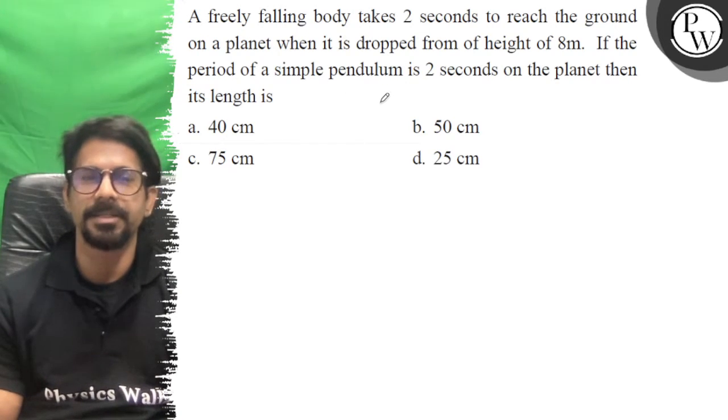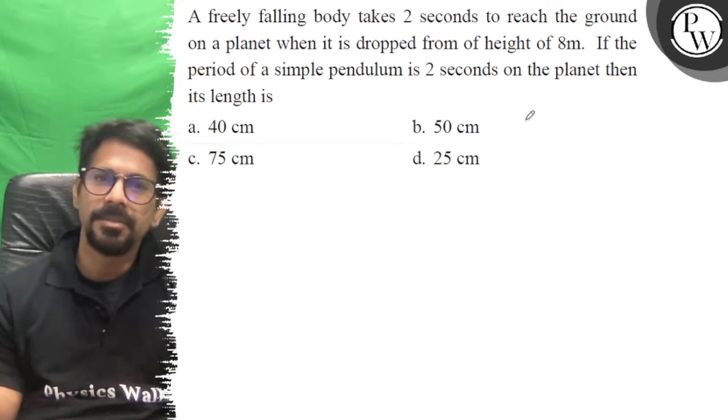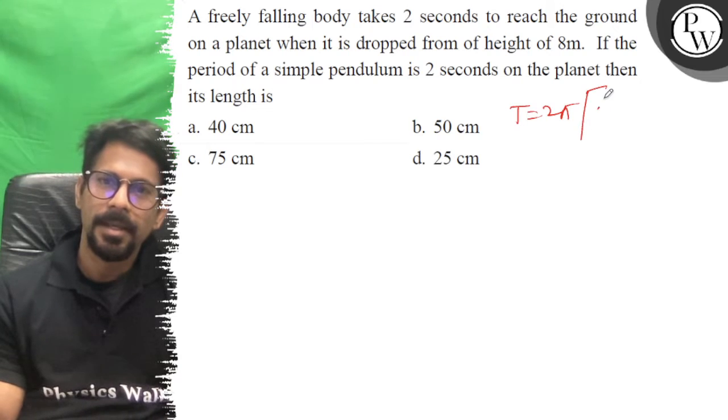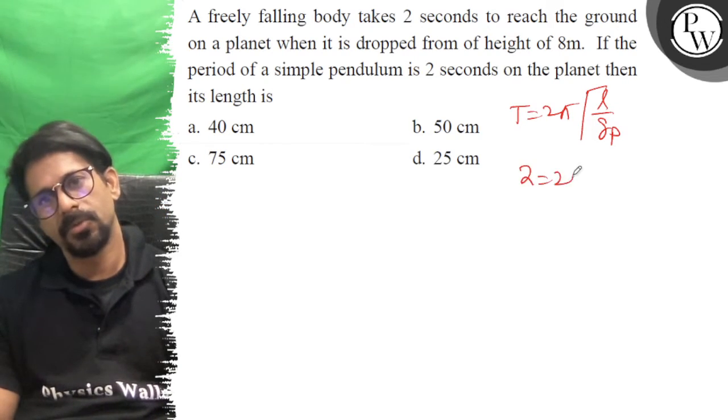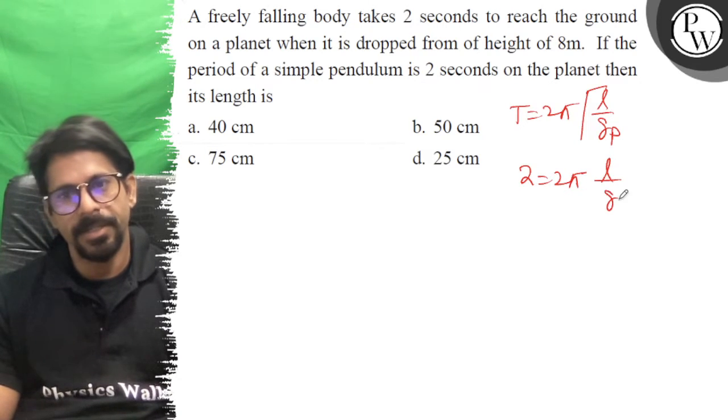So what we need to find is the length. We know T equals 2π root of l by g planet. So 2 is equal to 2π root of l by g planet.